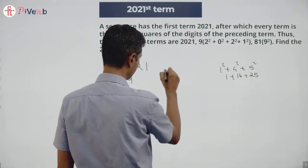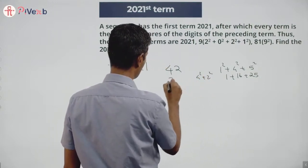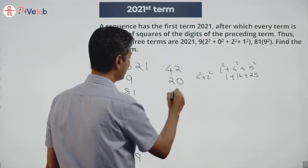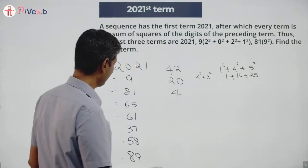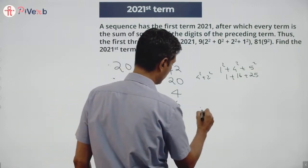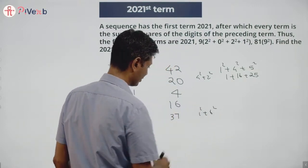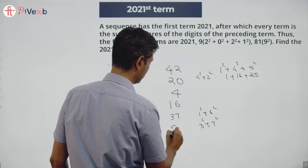The next number will be 1² + 4² + 5² = 1 + 16 + 25 = 42. The number after that is 4² + 2² = 16 + 4 = 20. After that is 4, then 2² = 4, next is 16. The next number is 1² + 6² = 37. The next number is 3² + 7² = 58.